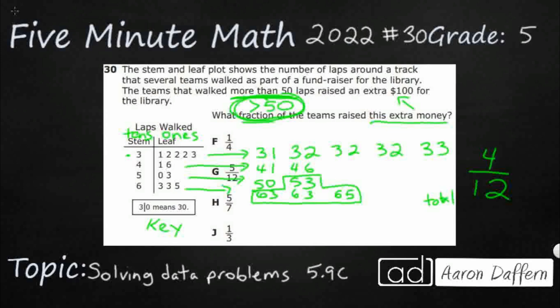So I'm all excited about four twelfths, and I don't see my answer. But I know that I can simplify. So let's do that. If I can divide by a number that goes into both the numerator and denominator.